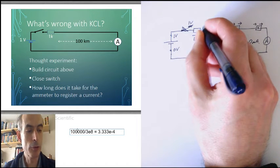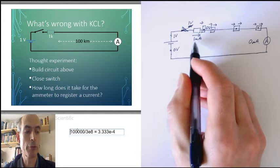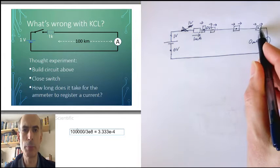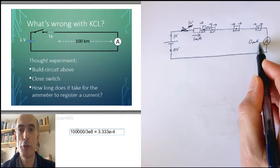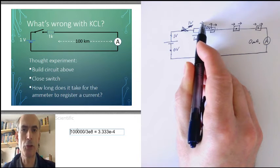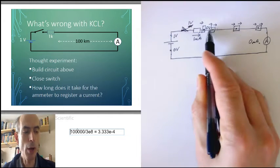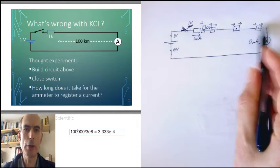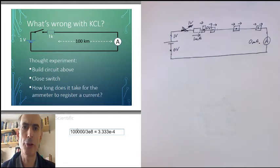But the current flowing into the first bit of the wire here is 1 milliamp. It comes from the current flowing through the resistor. But the current flowing out of the last bit of the wire must be 0 milliamps, at least for the first 333 microseconds. So if you've got 1 milliamp flowing into this wire, but 0 milliamps flowing out of this wire, then somewhere along the wire there must be a point where you have current flowing in but no current flowing out. But that violates Kirchhoff's current law.